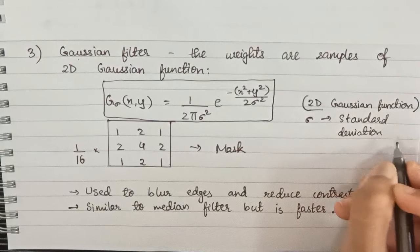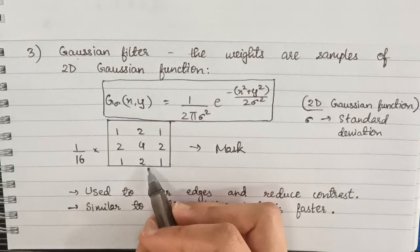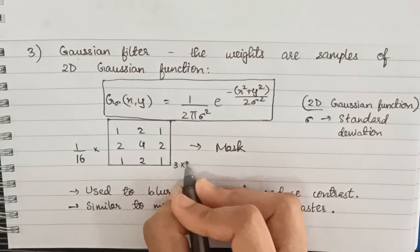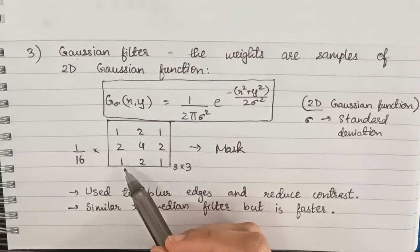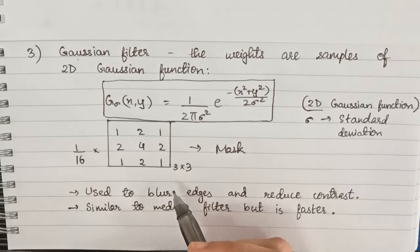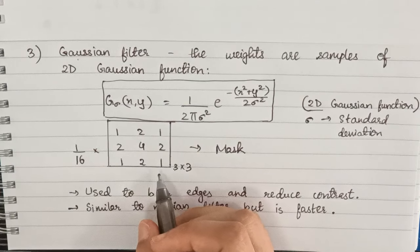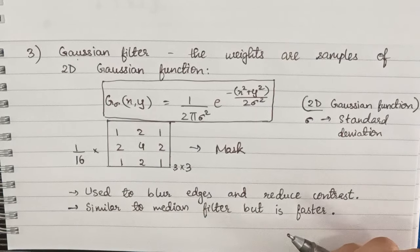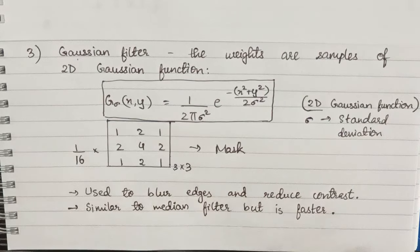Here this is a 3 by 3 mask: 1 by 16 into 1 2 1, 2 4 2, 1 2 1. Now if you see, this is similar to our weighted average mask, so that's why our answers would be the same when we calculate using this mask.